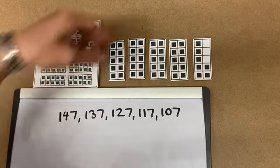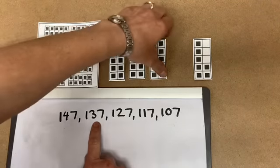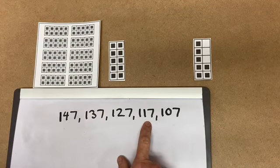If we're going to take away tens, we simply slide a 10 out, 137, which is here. We take another 10 out, 127. We take another 10 out, 117.